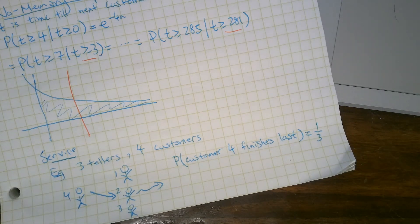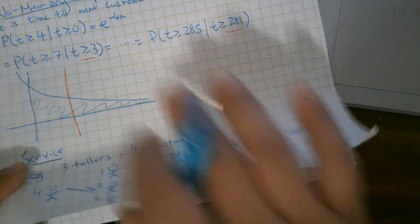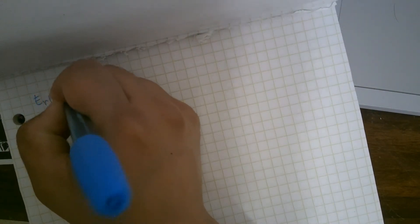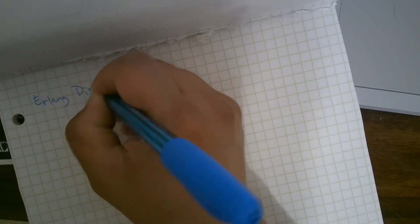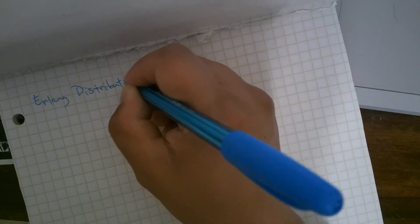So for service, we do a different distribution called the Erlang distribution. So we're getting rid of exponential distribution. We're doing Erlang distribution.